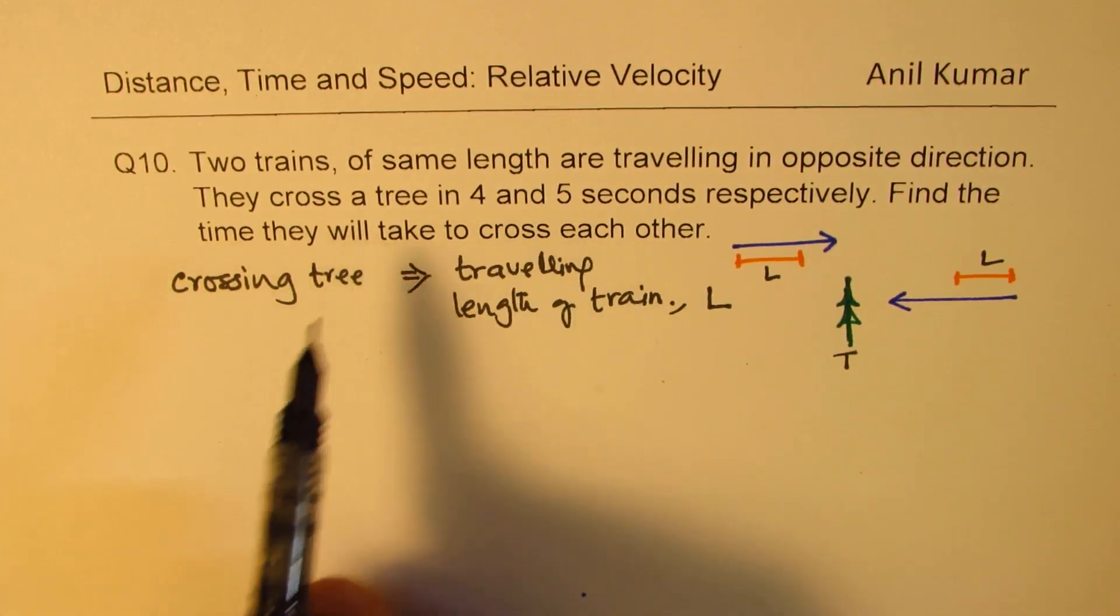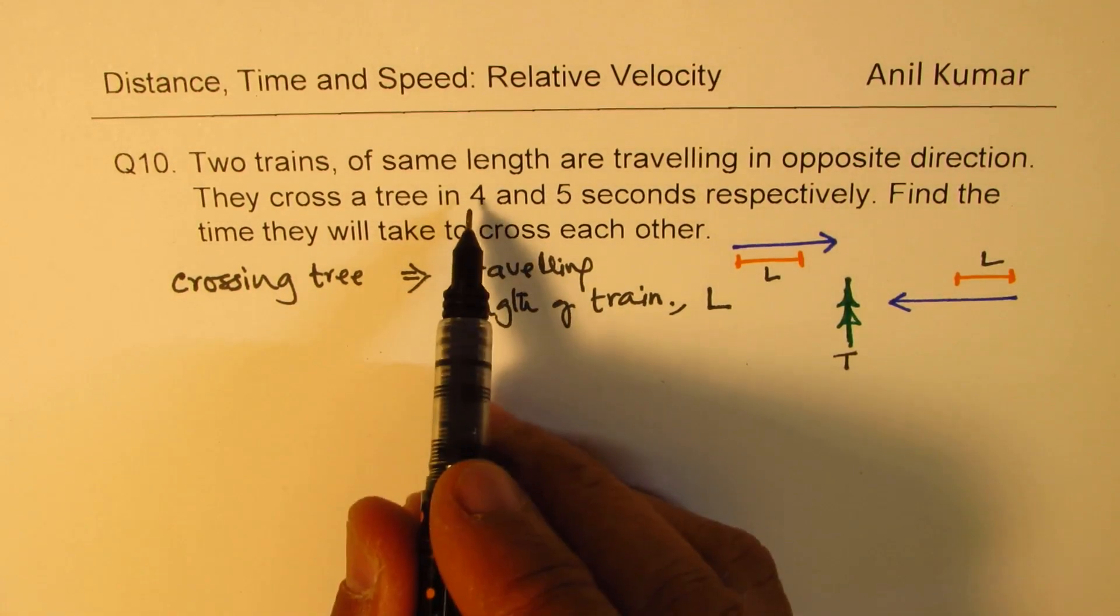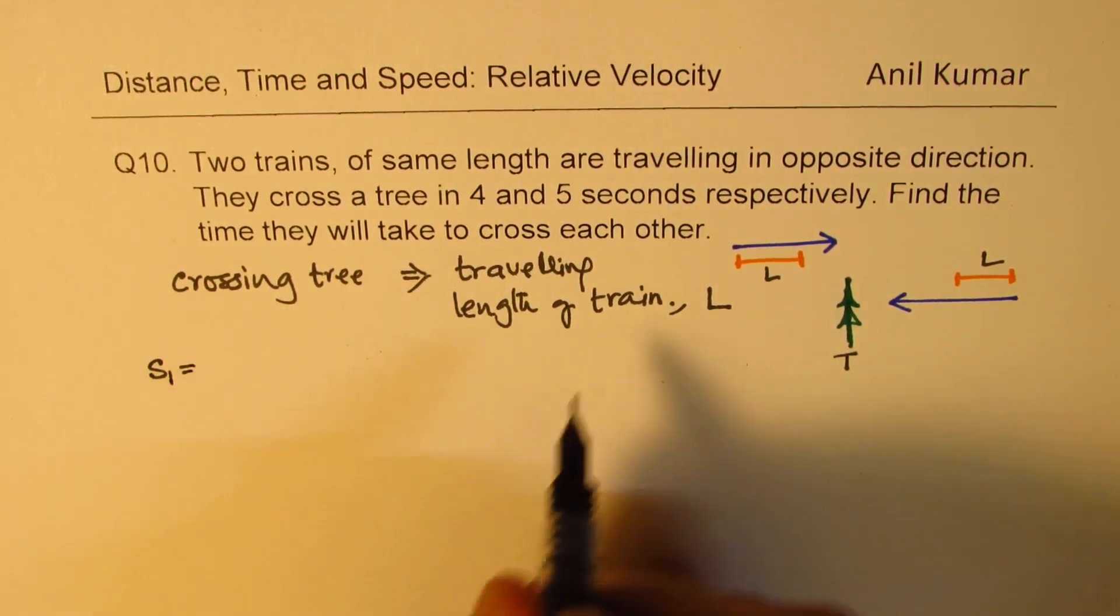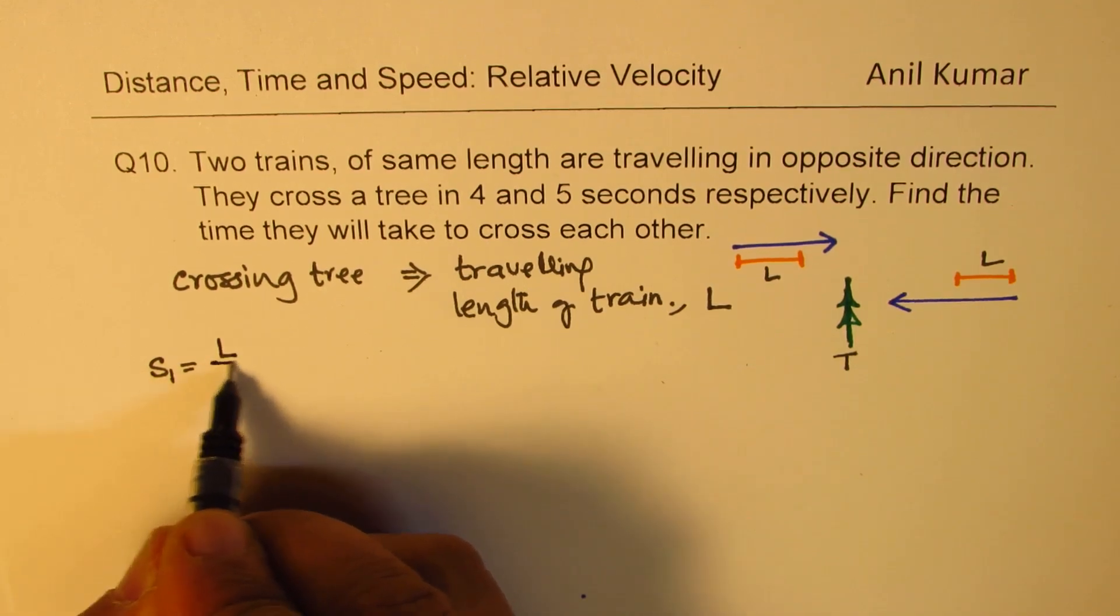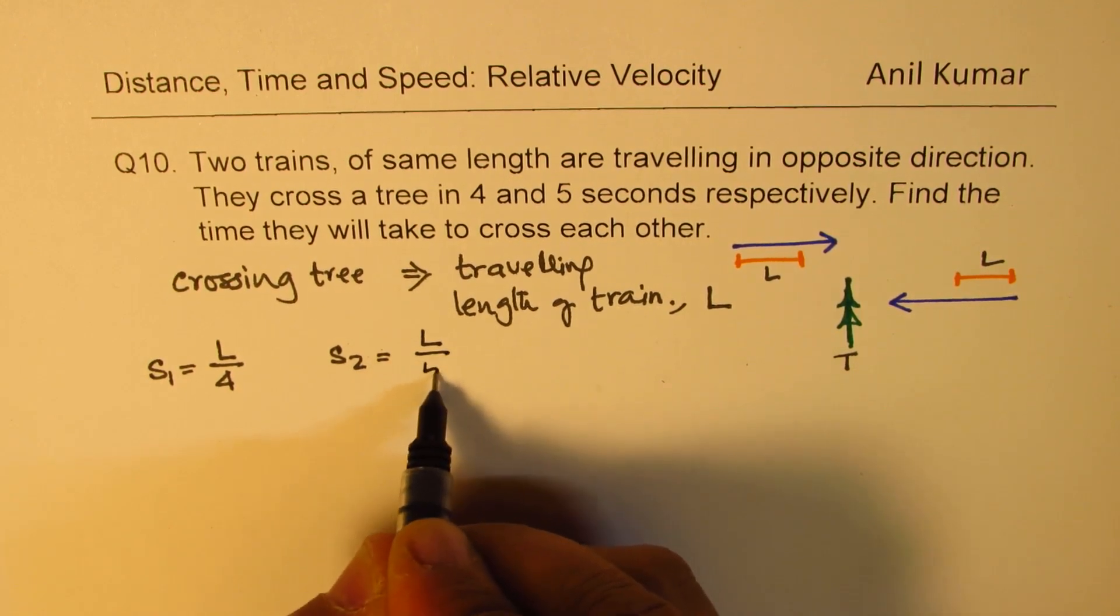Now, what is the speed? When the time taken for first one is 4, so the speed of 1, let us say speed of 1, will be length over 4. And the speed of the second train will be length over 5.